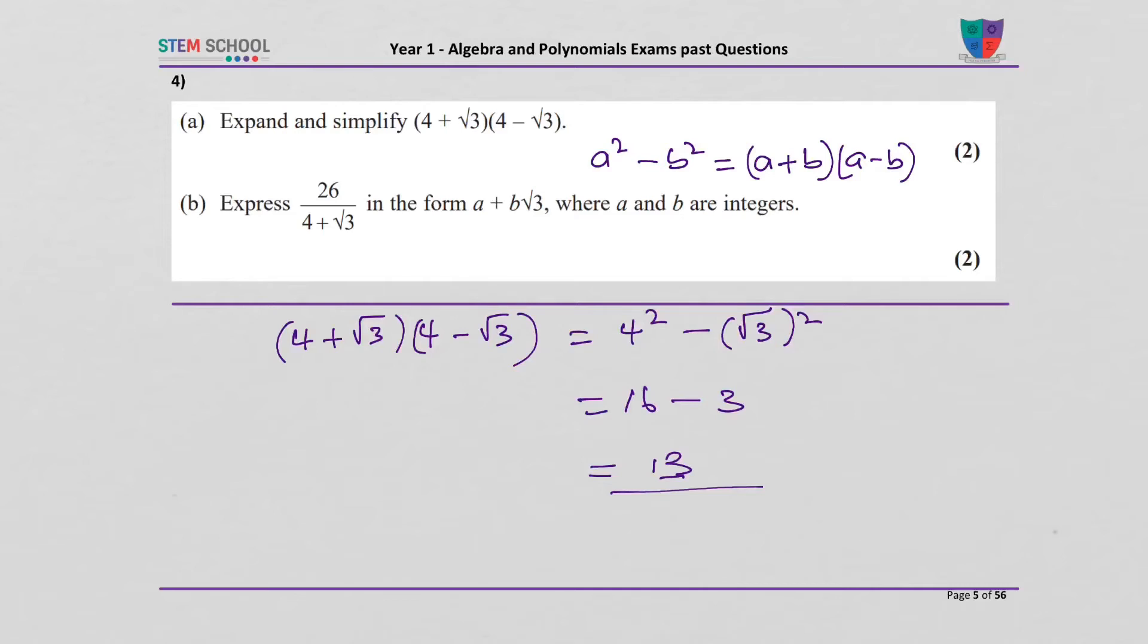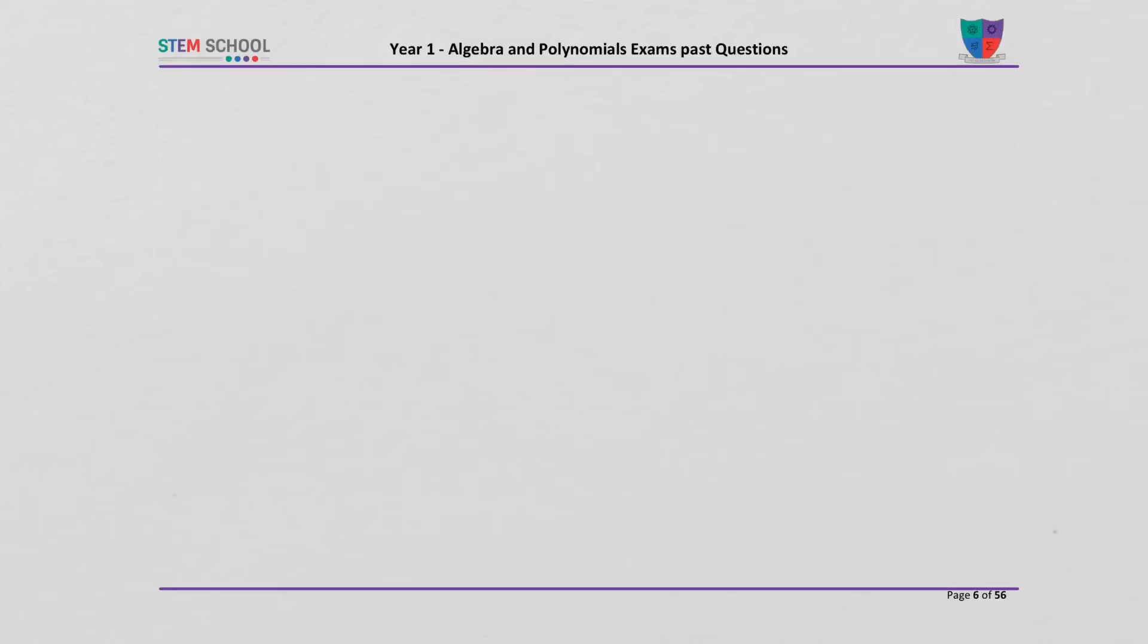Question b states that 26 over 4 plus root 3. I need to rationalize the denominator by multiplying both numerator and denominator by the conjugate pair of the denominator. So that would be 26 over 4 plus root 3 times 4 minus root 3 over 4 minus root 3.